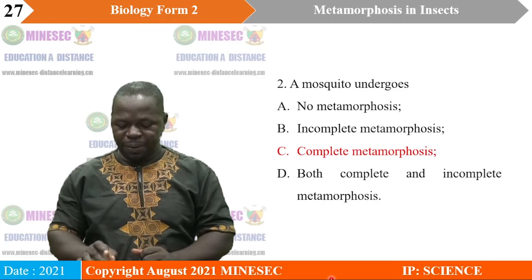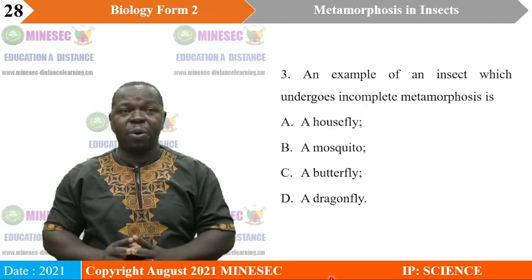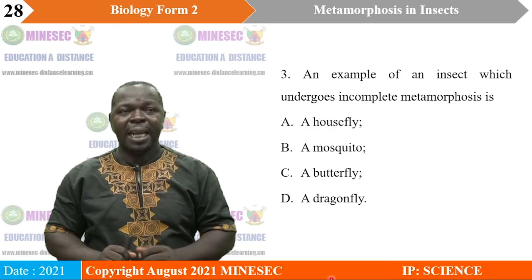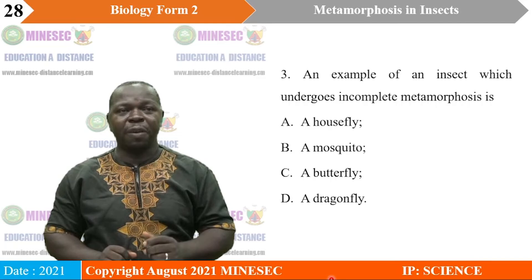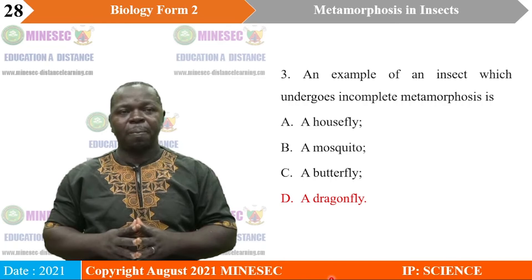An example of an insect which undergoes incomplete metamorphosis is — A. A housefly, B. A mosquito, C. A butterfly, D. A dragonfly. The correct answer is D, a dragonfly. A dragonfly undergoes incomplete metamorphosis; its developmental stages involve the egg stage, the nymph stage, and the adult stage.